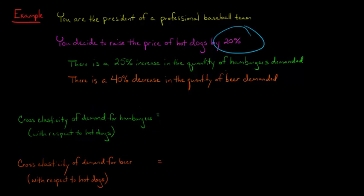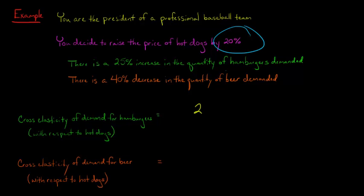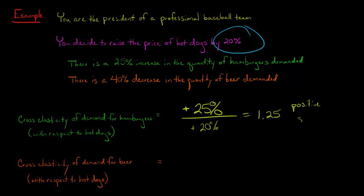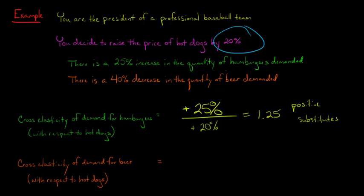For the cross elasticity of demand for hamburgers: we take the 25% increase in quantity of hamburgers demanded — positive 25% — and divide by the 20% increase in the price of hot dogs, giving us positive 1.25. Since this is positive, the two goods are substitutes. Hot dogs became more expensive, demand for hamburgers went up — people substituted away from hot dogs toward hamburgers.